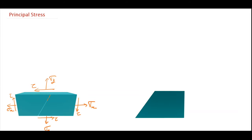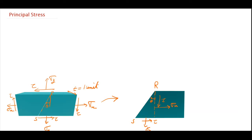If I want to analyze the stress on a plane making angle theta with the normal, where theta is in the clockwise direction, I consider this as plane RS. To make this a 2D problem, I consider the thickness of this element as one unit, so I can transform it into a two-dimensional figure. In this figure, the vertical plane and the plane under consideration RS makes angle theta in the clockwise direction.